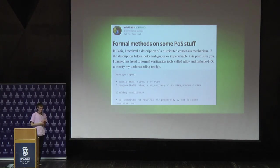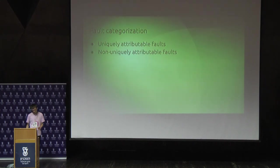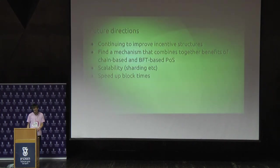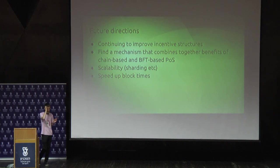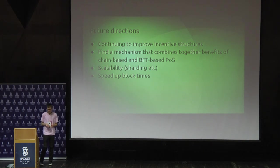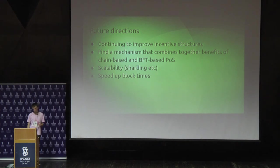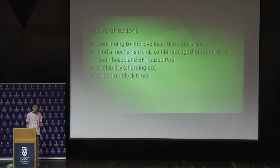As for longer-term challenges for Casper, the main ones are: first, continuing to improve fine-grained incentives — how to encourage people to stay online, how to maximally penalize going offline, how to penalize various kinds of attacks, and whether we can combine the benefits of BFT-based proof of stake and chain-based proof of stake. Second, scalability — things to do with sharding and just making the whole thing go faster.